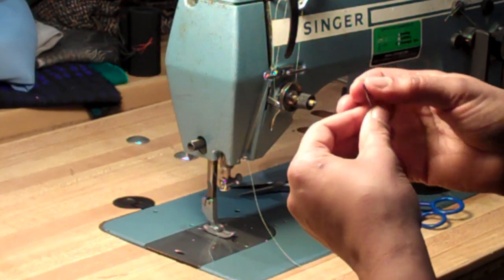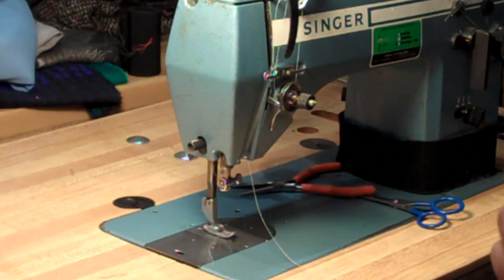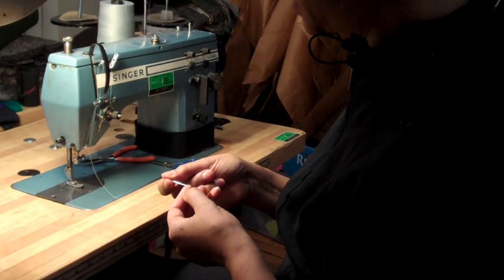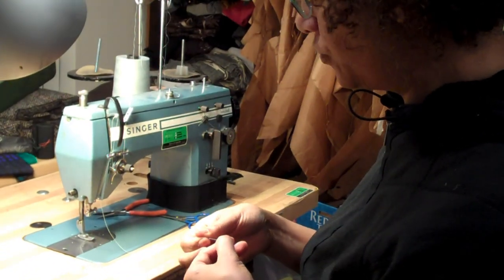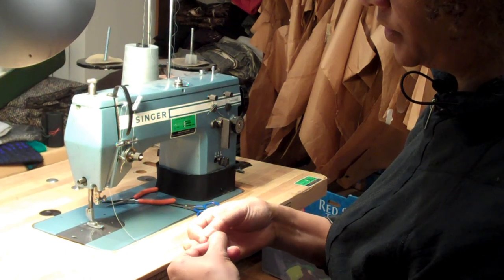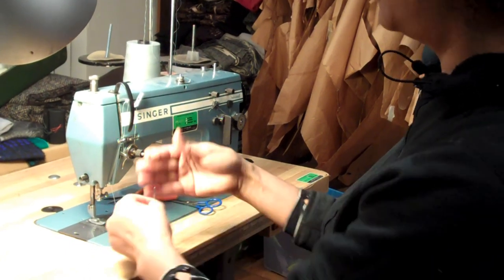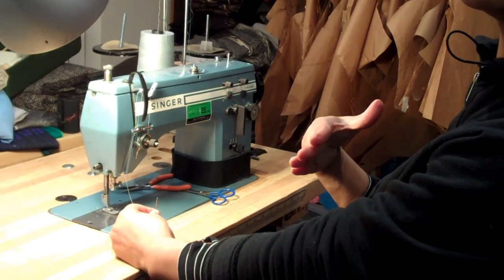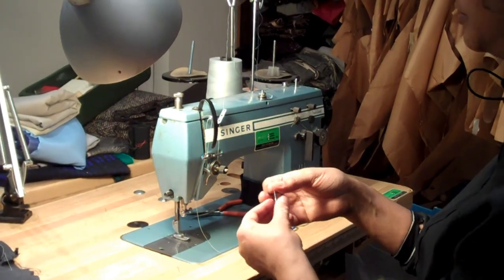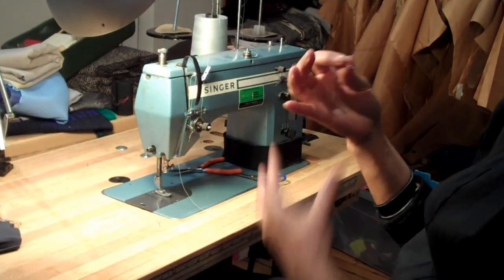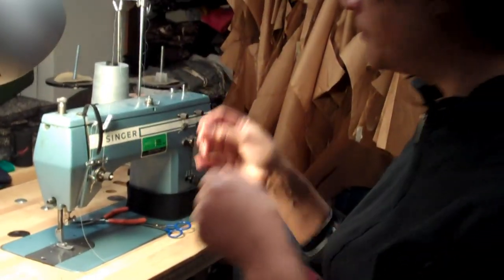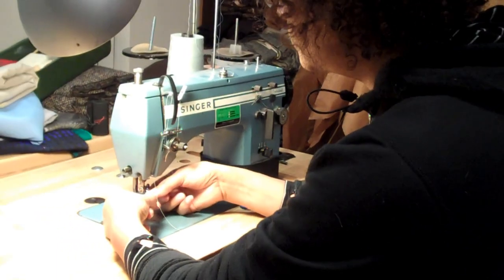The needle for this machine is round. A lot of times on sewing machines, you'll have a needle with a flat back. This needle doesn't have that. What it has is a groove in front of the needle. You can kind of put your fingernail in there and feel that groove. That groove faces forward towards you. So, when you go to put the needle back in or change the needle... Because a lot of times if it's skipping stitches, that means you need a new needle.